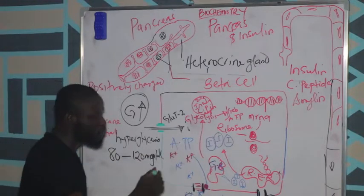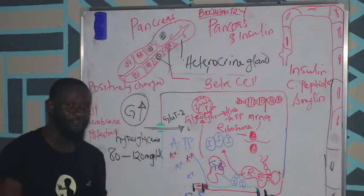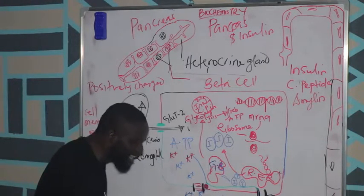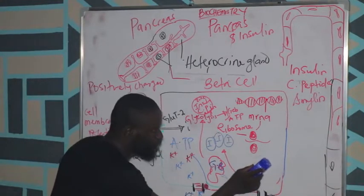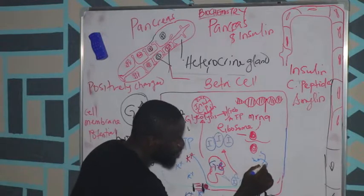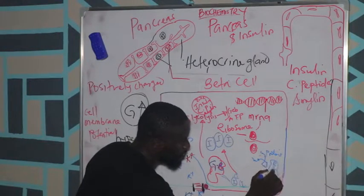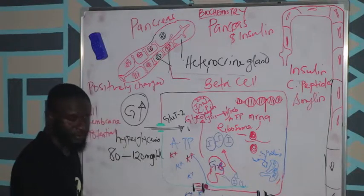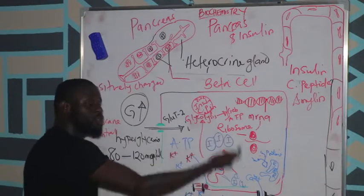The moment the potassium channel is closed and you have a lot of potassium ions inside causing increased cell membrane potential, it triggers a second channel — the calcium channel (Ca²⁺). So much potassium inside the cell triggers this calcium pump. Calcium does not stay out; it triggers the influx of calcium into the cell.